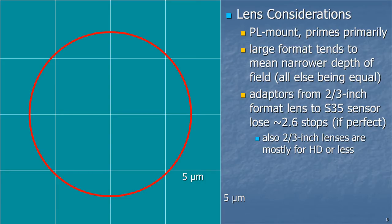There's also a lens issue with this larger sensor. The individual photo sites are roughly 5 microns on a side, which is good for noise averaging. These cameras typically use a PL mount — the sort used for 35mm film cameras — and tend to use prime lenses, not zoom lenses. The larger format means a narrower depth of field, which may be good for dramatic shooting but not necessarily for news and sports. If you want to use those long lenses for sports, you need an adapter. And even a perfect adapter will lose about 2.6 stops of light — roughly 600% more light needed. Also, most two-thirds-inch lenses out there are designed for HD resolution or less.